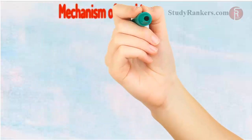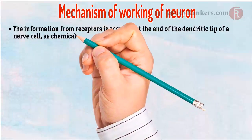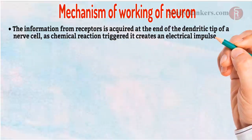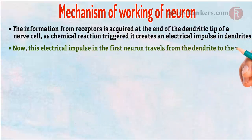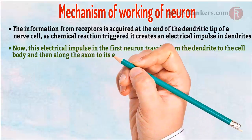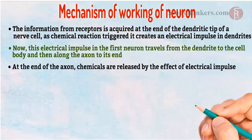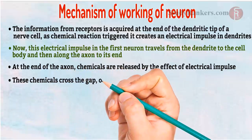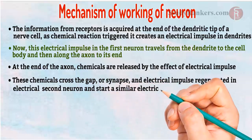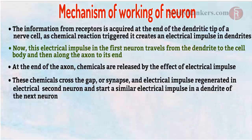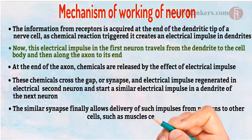The mechanism of working of a neuron: Information from receptors is acquired at the end of the dendritic tip of a nerve cell. A chemical reaction is triggered, creating an electrical impulse in the dendrites. The electrical impulse travels from the dendrite to the cell body and then along the axon to its end. At the end of the axon, chemicals are released due to the electrical impulse. These chemicals cross the gap or synapse, and an electrical impulse is regenerated in the second neuron, starting a similar impulse in the dendrite of the next neuron. This process finally allows delivery of impulses from neurons to other cells such as muscle cells or glands.